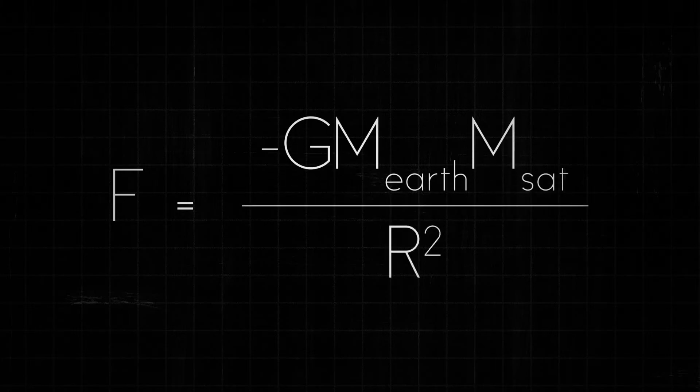So the force of gravity acting on a satellite is equal to negative G, the gravitational constant, times the mass of the Earth, times the mass of the satellite, all divided by the distance between the center of the Earth and the satellite squared.